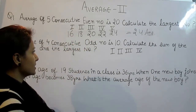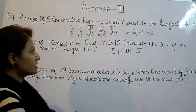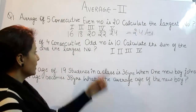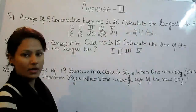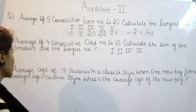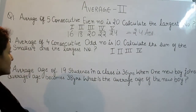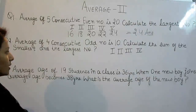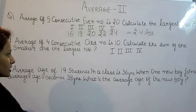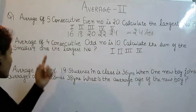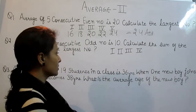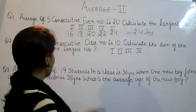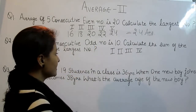Average of 5 consecutive even numbers. Next problem: the average of 4 consecutive odd numbers is 10. Calculate the sum of the smallest and the largest number. Now we have 4 numbers, and the average given is 10.